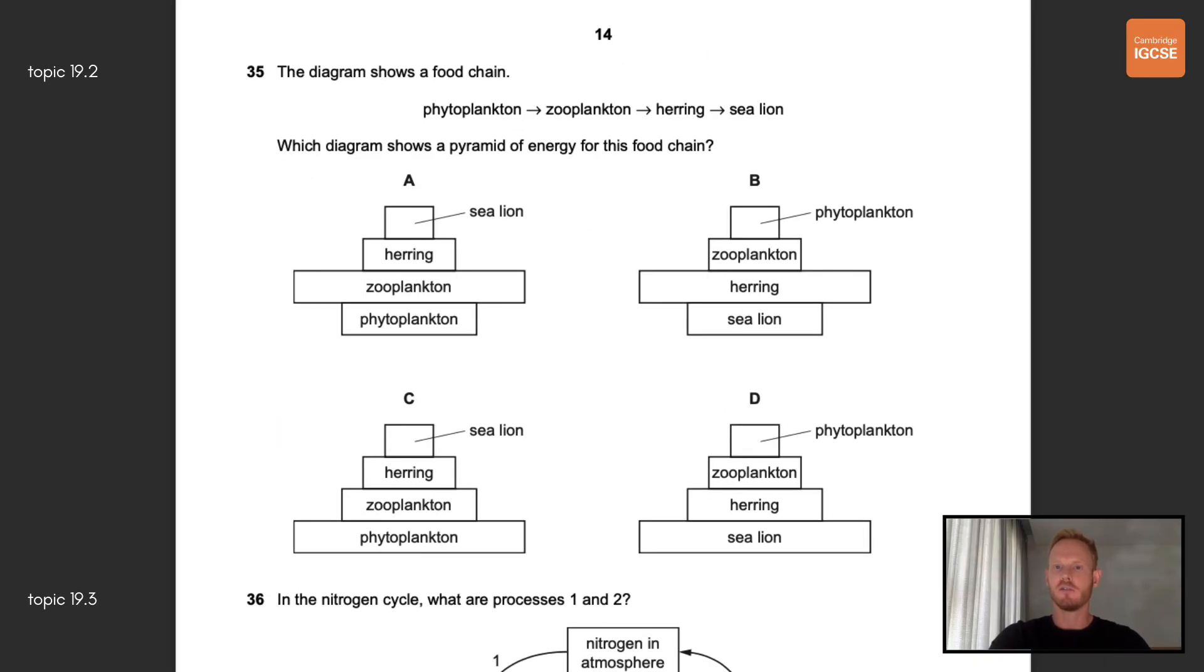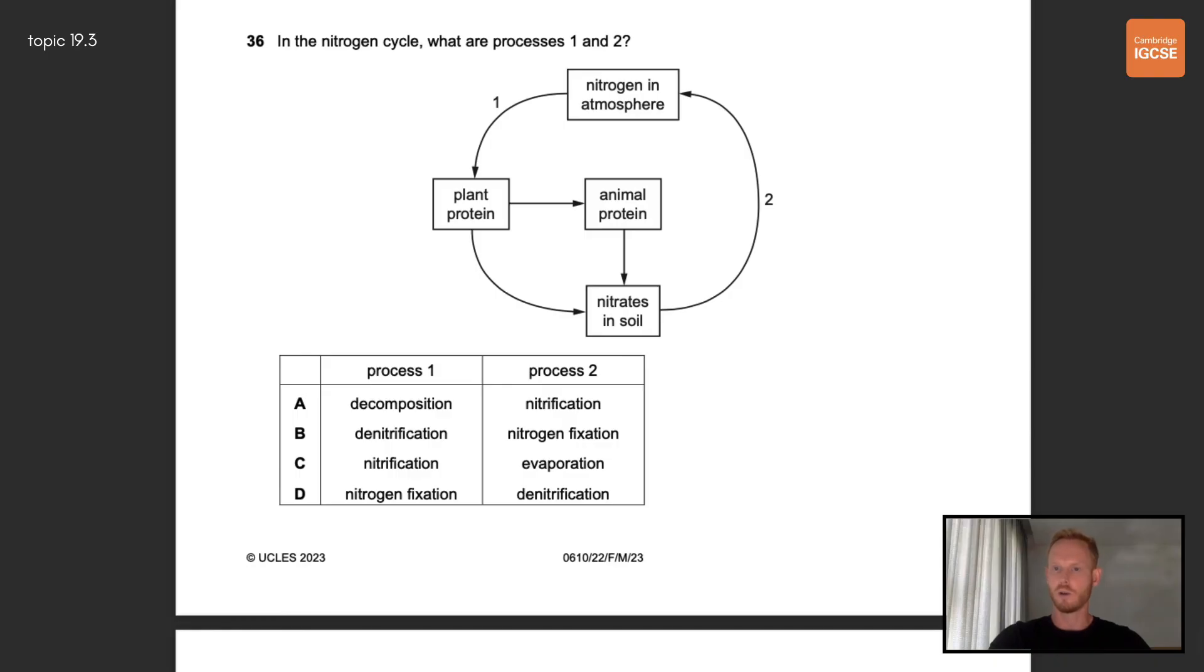Number 35, the diagram shows a food chain, phytoplankton, zooplankton, herring and sea lion. Which diagram shows a pyramid of energy for this food chain? Food chains depict the transfer of energy from one organism to the next, starting with a producer. The producer, in this case phytoplankton, always occupies the base of an ecological pyramid, so the answer must be either A or C. Pyramids of energy are always pyramidal in shape, as energy is lost at each trophic level. The correct answer is therefore C. Number 36, in the nitrogen cycle, what are processes 1 and 2? The correct answer here is D. Nitrogen fixation converts atmospheric nitrogen gas into ammonia, which is absorbed by plants, while denitrification is the conversion of nitrates in the soil to nitrogen gas.